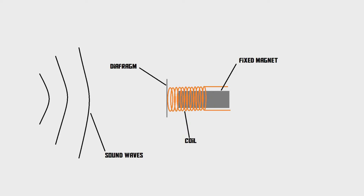When you speak into the microphone, the sound waves of your voice will hit the diaphragm, so the diaphragm is going to vibrate at the frequency of your voice. Then the coil is also going to vibrate, because it's connected to the diaphragm, which means that the coil is now vibrating close to a magnet. When a coil moves close to a magnet, electricity is generated inside the coil. The frequency at which the electricity is generated is equal to the frequency of your voice. And that is how the dynamic microphone converts sound to electricity.